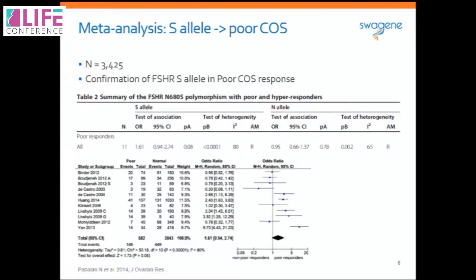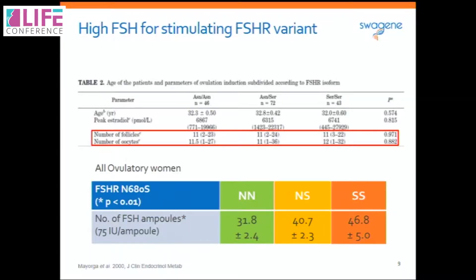Recently it has been found that when the FSH receptor variation exists, it leads to decreased downstream signaling and decreased gene transcription and further gene expression in folliculogenesis. Over the last 20 years there have been several papers on this, and we now have meta-analyses showing a 61 percent increase in poor response among women carrying the FSH receptor genetic variation. As an example, one paper showed that to achieve equal numbers of follicles and oocytes, women with one variant copy required significantly increased amounts of FSH, and women with two variant copies required even higher doses.